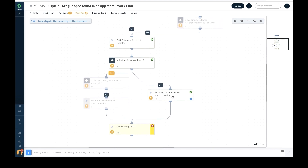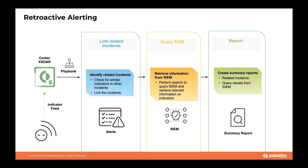In certain situations, new indicators are shared involving a high-profile attack such as a nation-state attack targeted at a certain industry vertical. Under these circumstances, security teams are challenged to provide an immediate assessment to management. They are generally required to report if their organization has had any exposure to any indicators, whether it was detected and contained, and an incident response process. Providing retroactive alerting helps meet security outcomes in this case.